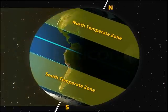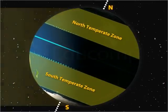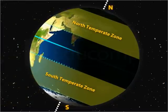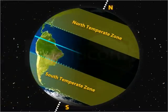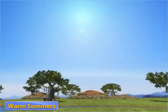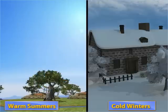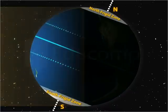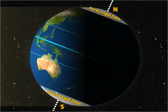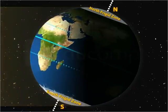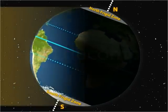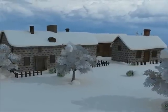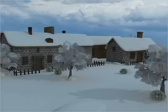The temperate zone receives slanting rays of sun, so this region receives less amount of heat as compared to the torrid zone. The temperate zone experiences warm summers and cold winters. In the frigid zone, the rays of the sun fall extremely slanting, which do not bring much heat even if there are longer periods of daylight. The regions falling in the frigid zone are the coldest and remain frozen for most part of the year.